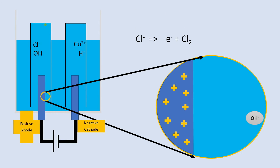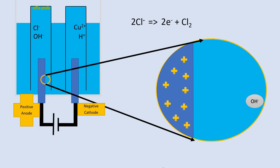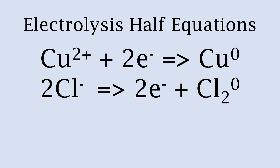The summary reaction at the anode is: 2Cl⁻ → 2e⁻ + Cl₂. We need two chloride ions to give us two electrons and produce the chlorine gas bubbling off. To summarize: the copper ions pick up two electrons and turn to copper metal, and the two chloride ions give up two electrons and form chlorine gas.